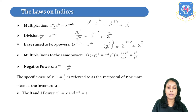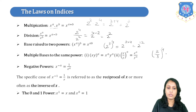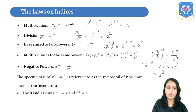The next law is multiple bases raised to the same power. If we have (x·y) whole raised to a, we can split them as x raised to a into y raised to a. Similarly, (x upon y) whole raised to a gives x raised to a upon y raised to a. For example, (2/3) raised to 4 gives 2 raised to 4 upon 3 raised to 4. And 6 raised to 3 can be written as (2×3) whole raised to 3, that is 2 cubed into 3 cubed.